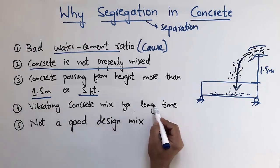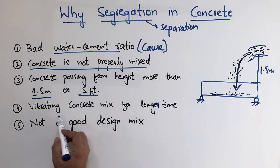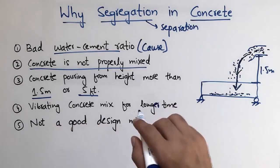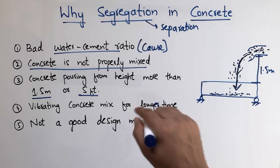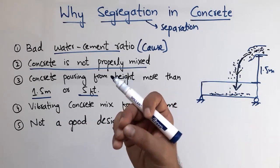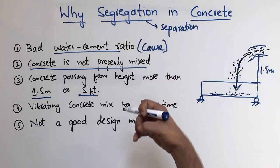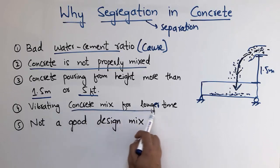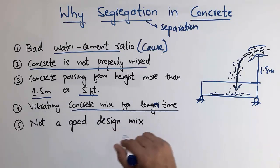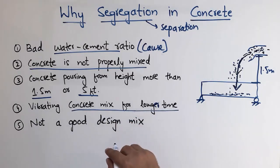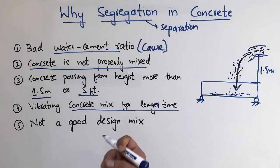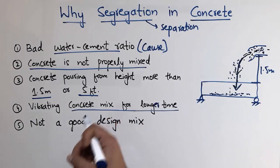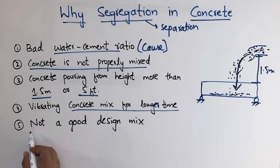The fourth factor is vibrating the concrete mix for too long. We should not vibrate the concrete for a long time because it causes water to rise to the surface, leading to segregation. Excessive vibration is not good — it brings water up from the concrete and results in a poor mix.